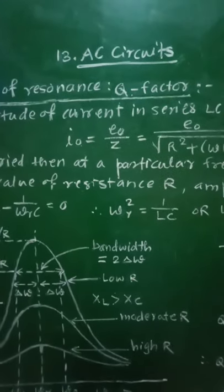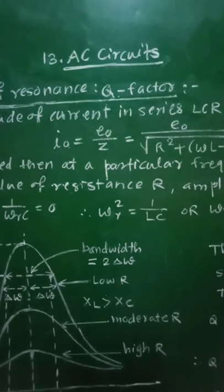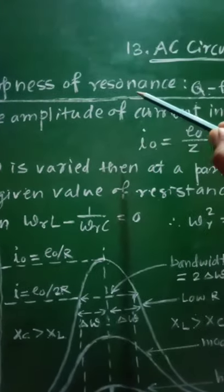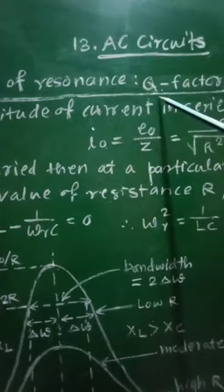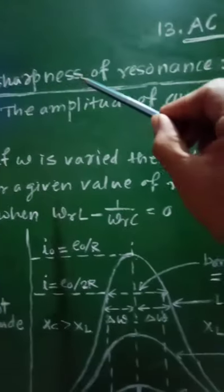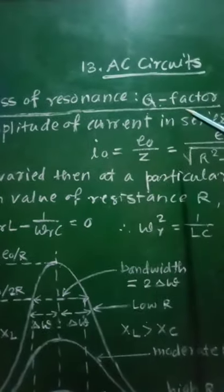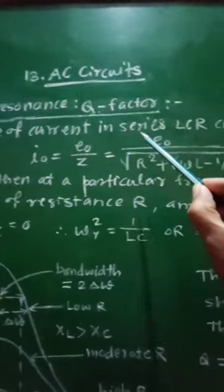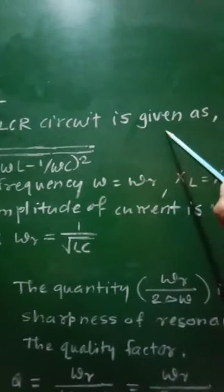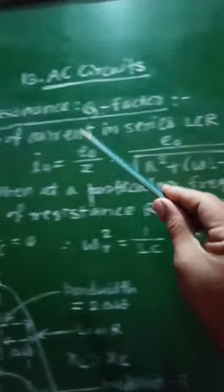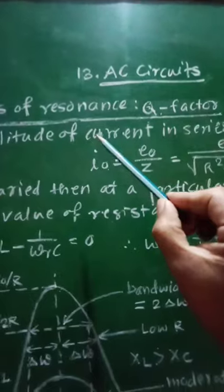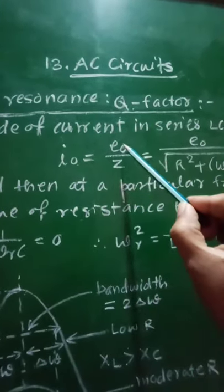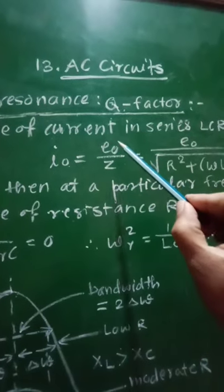In Class 12 Physics, Chapter 13 on AC circuits, we will study the sharpness of resonance, that is the Q factor. We know that the amplitude of current in a series LCR circuit is given as the amplitude of maximum current I₀ equal to E₀ divided by Z.